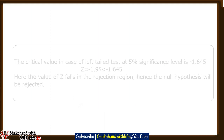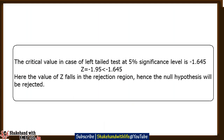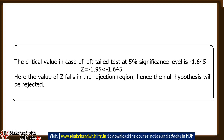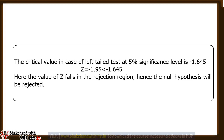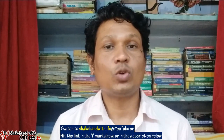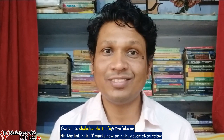Using the critical value method: in the case of a left-tail test at an alpha of 5 percent, the critical value is minus 1.645. The calculated Z statistic of minus 1.95 is less than minus 1.645 and falls in the rejection region, hence the null hypothesis is rejected.